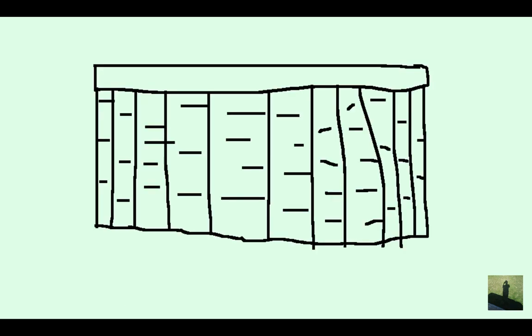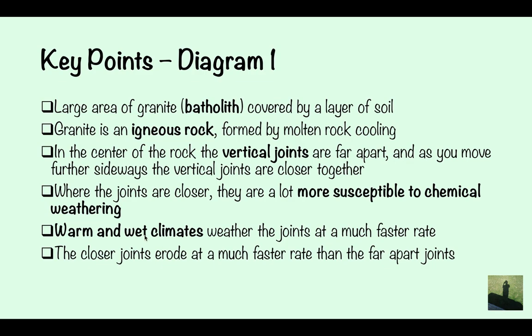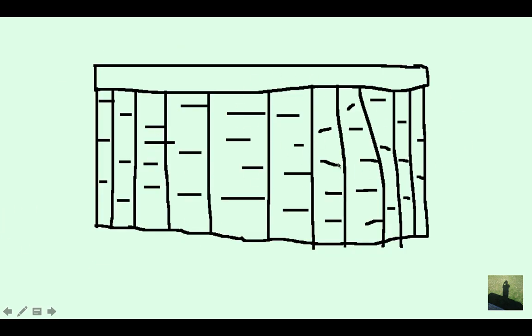This is the first diagram here. Remember, when you draw in your diagrams, don't use a ruler. You've got to do it freehand. Annotate your diagrams to show the examiner where you're talking about on your diagram. It's no good in just having this big amount of text here. You've got to show it on the diagram as well.